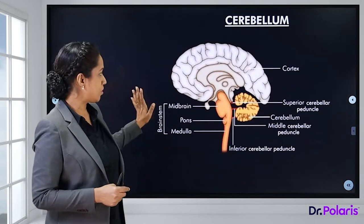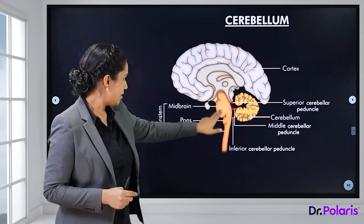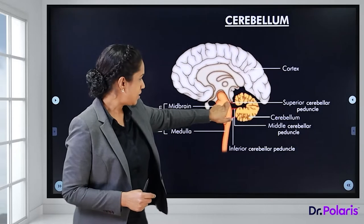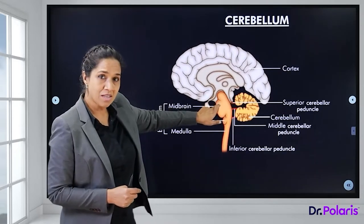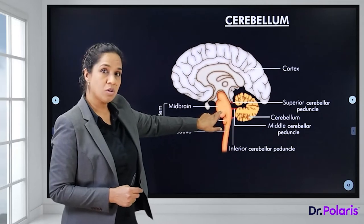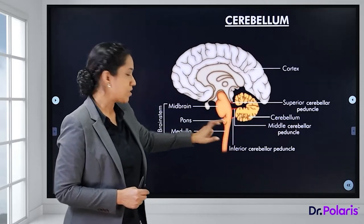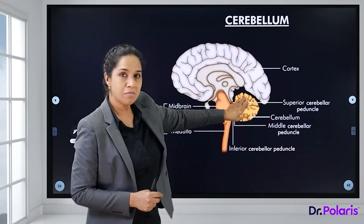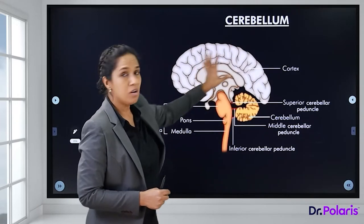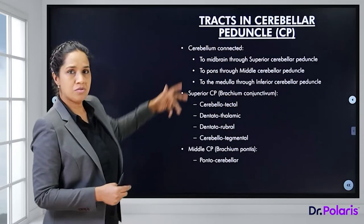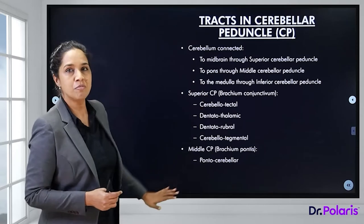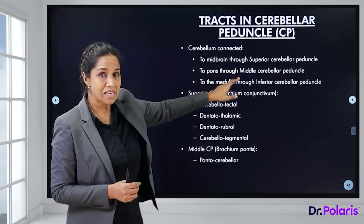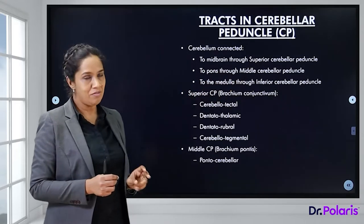The cerebellum is connected to the brain stem, which comprises the midbrain, pons, and medulla. It is connected to the midbrain by the superior cerebellar peduncle, to the pons by the middle cerebellar peduncle, and to the medulla by the inferior cerebellar peduncle. The cerebellum comprises only 10% of the whole weight of the cerebrum.